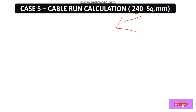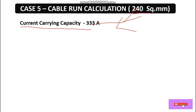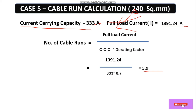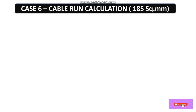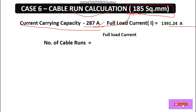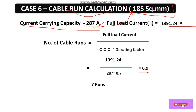Case 5: For 240 square mm cable, the current carrying capacity is 333 ampere. Full load current is 1391.24 ampere. Cable run = 5.9, meaning 6 runs are required. Case 6: For 185 square mm cable, the current carrying capacity is 287 ampere. After calculation, 6.9 runs are required, meaning 7 runs are needed.